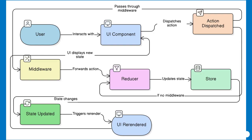Imagine your application as a busy city. Each building represents a component, and the people within are the data they hold. In a small city, neighbors shout messages across the street to communicate. This mirrors how local state in React components might suffice for simple apps. But as the city grows, shouting is unreliable.